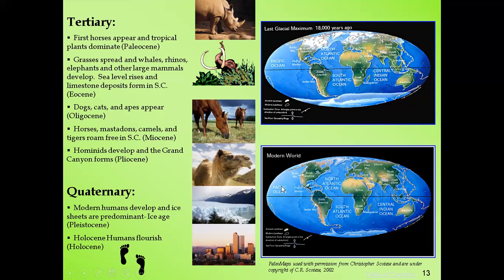Looking at the modern world as it is today, the continents have stabilized — but there is a possibility they could break apart or collide again since it takes millions of years for such changes to occur. Even now, some islands are submerging while others are emerging, because the ocean floor is not stable. This is the development of life through the use of the geologic time scale.